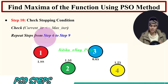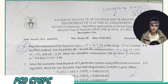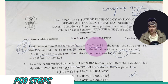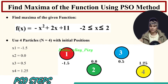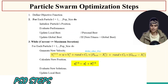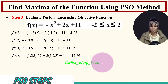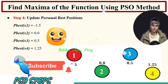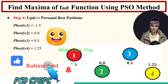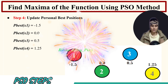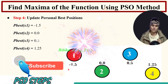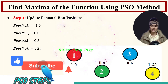In this video we used PSO method to find the maximum value for the objective function. We had four particles with initialized positions, evaluated their performance, updated local and global best, calculated new velocity and position for each particle, performed comparisons, and displayed the best solution - found at particle 4. That's all about this video. If you have any questions you can comment below. Thanks for watching.